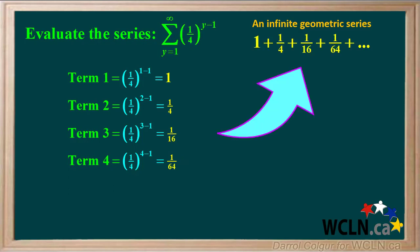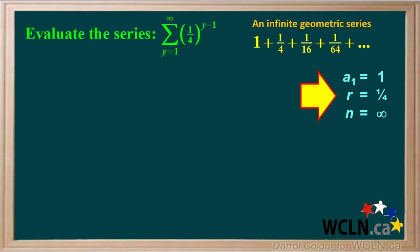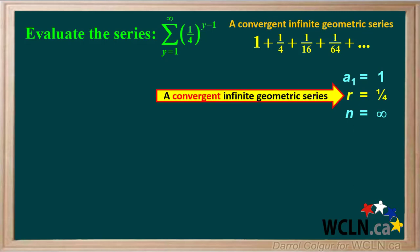We write the terms of this series, and because it's an infinite series, we write dot dot dot at the end. Looking at the terms, we can determine that a1 equals 1, r equals 1 quarter, and n equals infinity. Because r is between 0 and 1, this infinite geometric series is convergent, which means we can determine its sum.